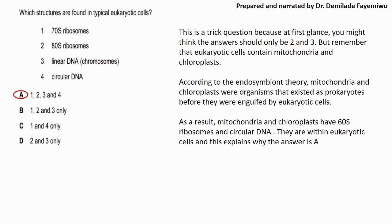But you also need to remember that in typical eukaryotic cells you have mitochondria and chloroplast. Mitochondria and chloroplast are said to be prokaryotic organisms that existed on their own before they were engulfed by eukaryotic cells. Which means as prokaryotic organisms they had 70S ribosomes as well as circular DNA. So now that they've been engulfed by eukaryotic cells, that means that they have 70S ribosomes, circular DNA within the eukaryotic cells. So that means you have to select all four structures in order to verify which ones are found in a typical eukaryotic cell.